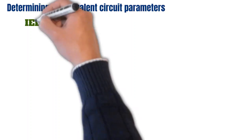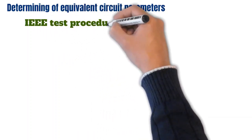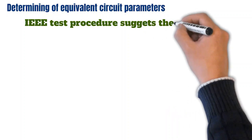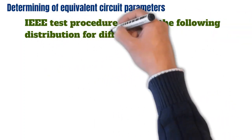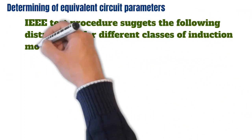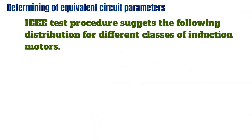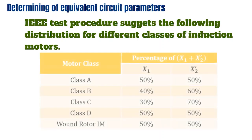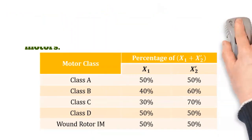We cannot yet determine X1 and X2' individually. The IEEE test procedure suggests a specific distribution of X1 and X2' based on the motor class, so now all equivalent circuit parameters can be determined.